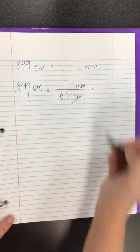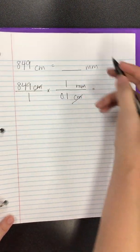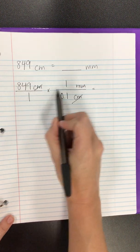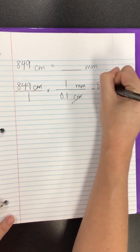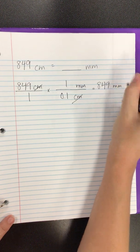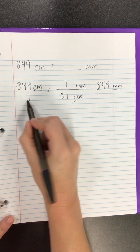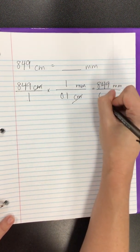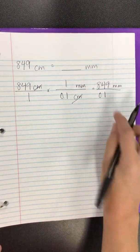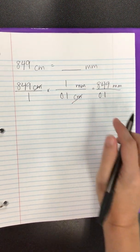Alright, cross-cancel our units. We'll multiply across. So 849 times 1 millimeter, 849 millimeters, divided by 1 times 0.1, 0.1. There are no units on the bottom because we canceled those out.